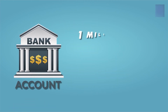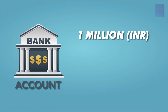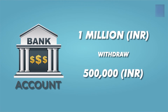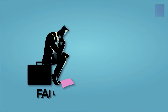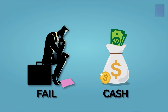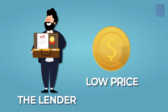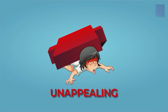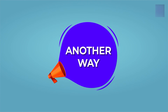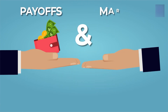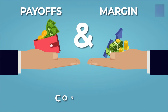For example, if your account has 1 million rupees, you can only withdraw 500,000 rupees. If you fail to bring in cash as an investor to reduce the debt, then the lender sells part of or all your collateral at a lower price, which is unappealing. This is another way which shows that payoff and margin work co-jointly.